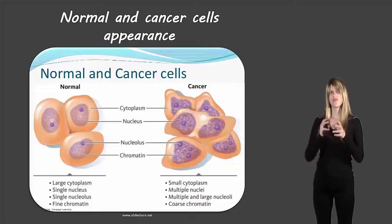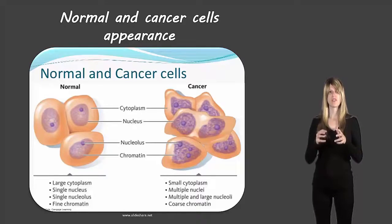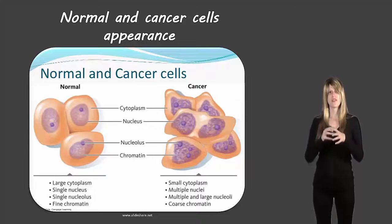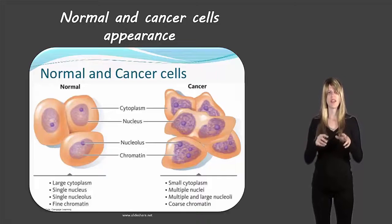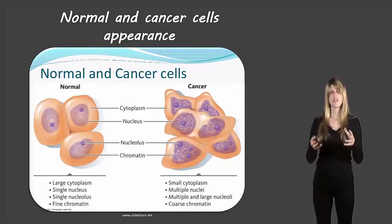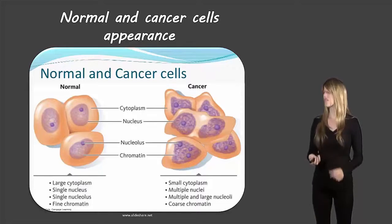The chromatin is also different. In normal cells the DNA is decondensed — almost like a plate of spaghetti — until it condenses to go through the cell cycle, and we call that chromatin. Whereas in the cancer cell the chromatin is much more coarse and the chromosomes are semi-condensed.